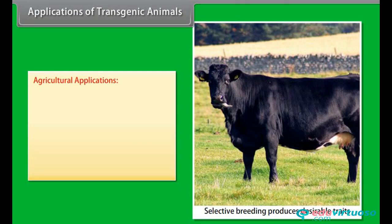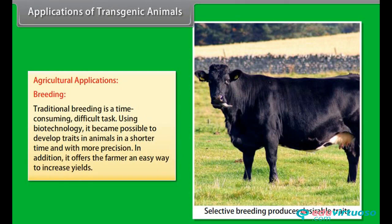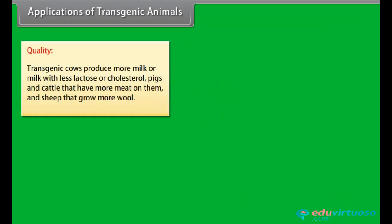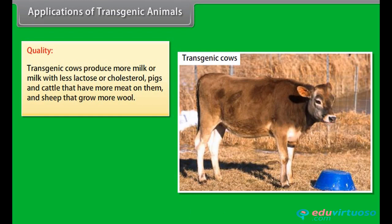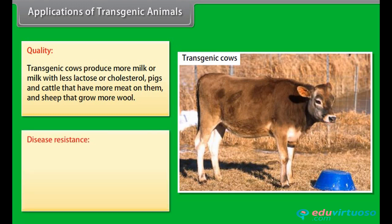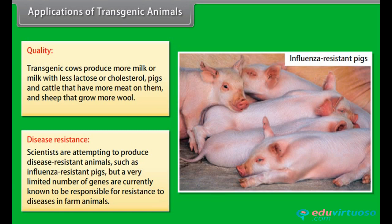Agricultural applications. Traditional breeding is a time-consuming, difficult task. Using biotechnology, it became possible to develop traits in animals in a shorter time and with more precision, offering the farmer an easy way to increase yields. Regarding quality, transgenic cows produce more milk or milk with less lactose or cholesterol, pigs and cattle have more meat, and sheep grow more wool. Scientists are also attempting to produce disease-resistant animals such as influenza-resistant pigs, though a limited number of genes are currently known to be responsible for resistance to diseases in farm animals.